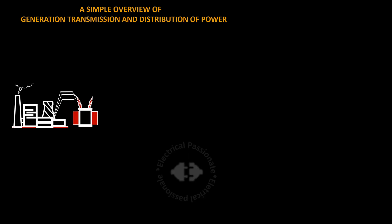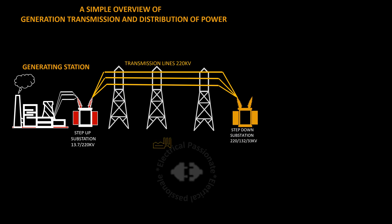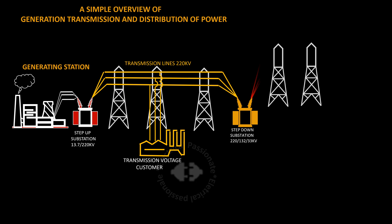Now please watch how generated power of a fixed voltage, after being stepped up and then stepped down at different voltages, is transmitted from generating station to the consumers requiring different voltage power by using transmission and distribution lines.